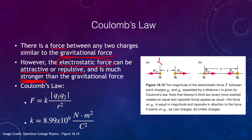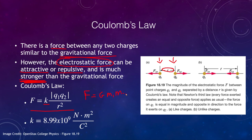Looking at two charges q1 and q2 separated by a distance r, the force is given by a constant k times |q1| times |q2| over r squared — taking the absolute values of those charges. This looks very similar to Newton's law of gravitation: G times m1 times m2 over r squared. k is the constant for electrostatic force, just as G was for gravity, and it has a much bigger value: 8.99 times 10 to the ninth newton·meters squared per coulomb squared.